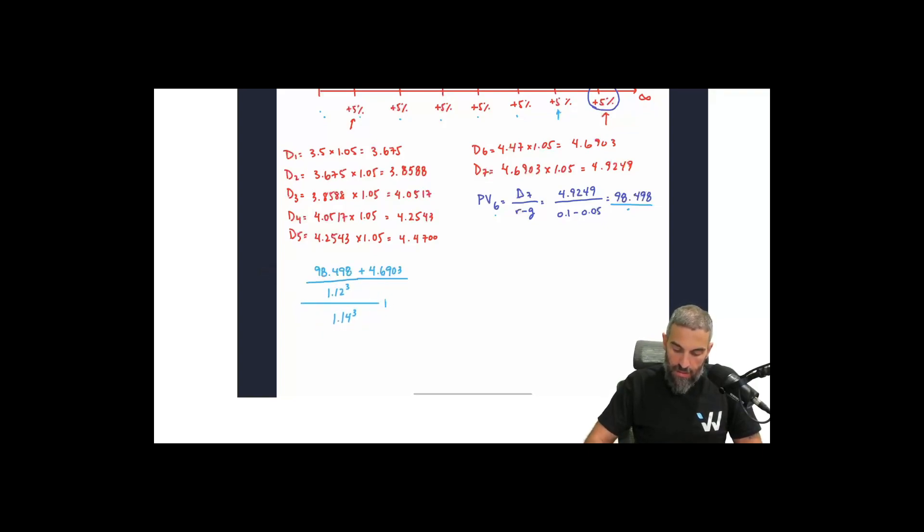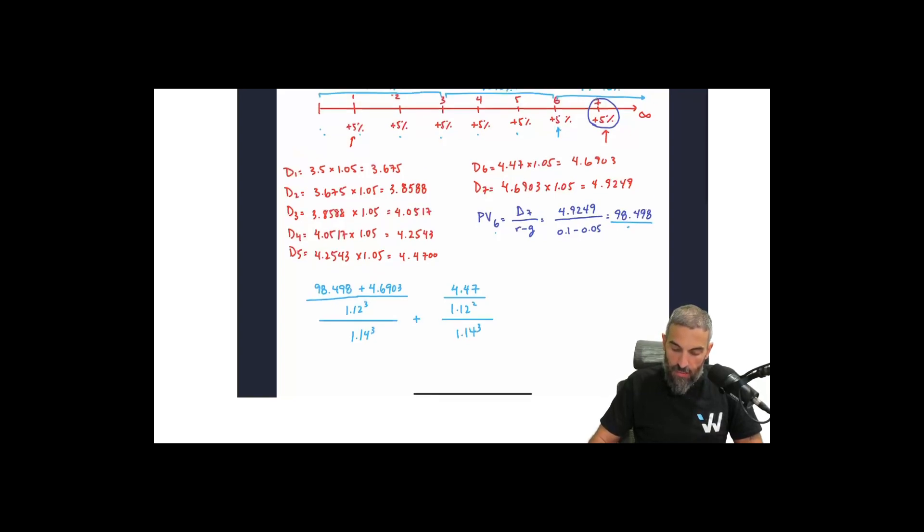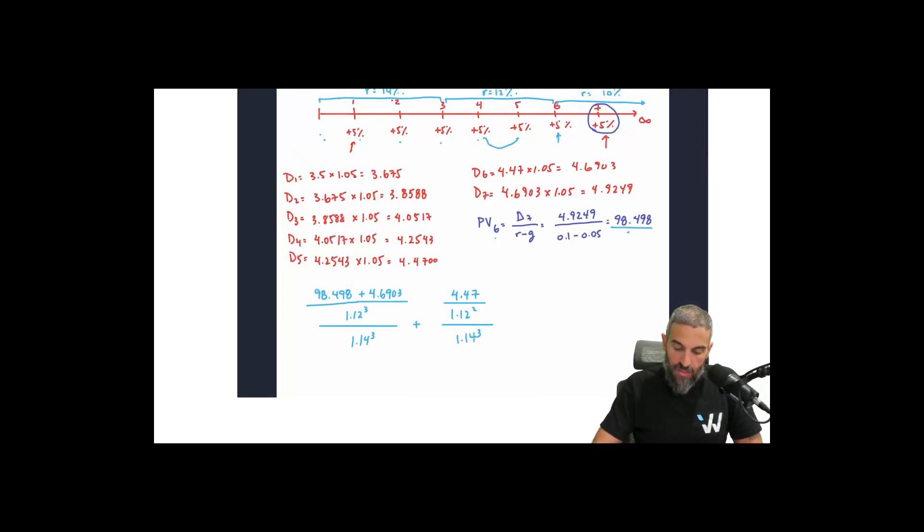Let's clean this up a little bit. For the next one, dividend at time 5 is 4.47. This one is going to be discounted at 12% for 2 years and then 14% for 3 years. Again, we're going from time 5, so 2 periods at 12%, 3 periods at 14%.